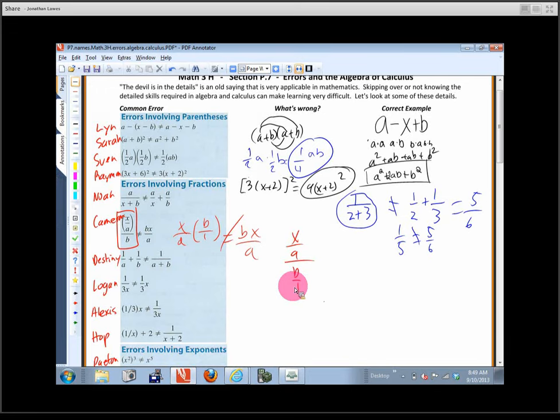Nope. You flip it over and you multiply. So, we'd flip this one over. So, the problem that they had, the mistake that they made, is they multiplied by b over 1 instead of 1 over b. They should have flipped that denominator and multiplied. So, that would put an x on the top and an ab on the bottom. Okay?